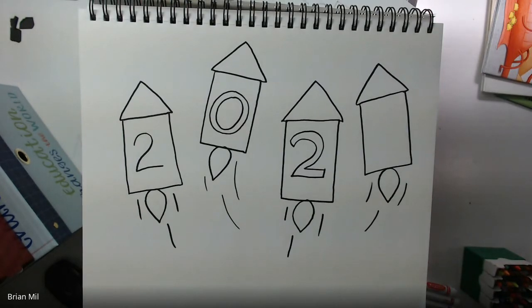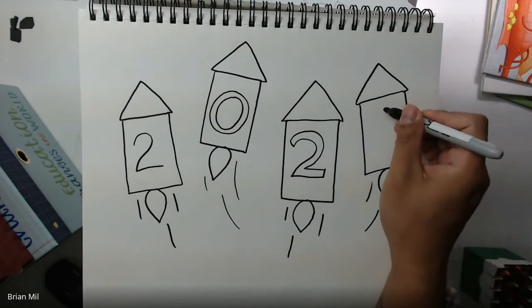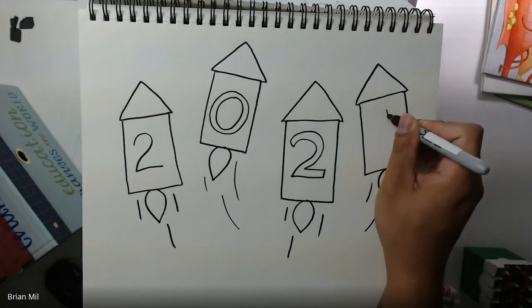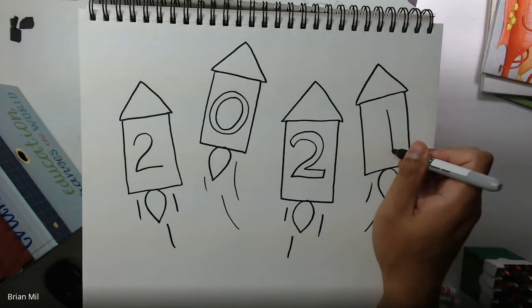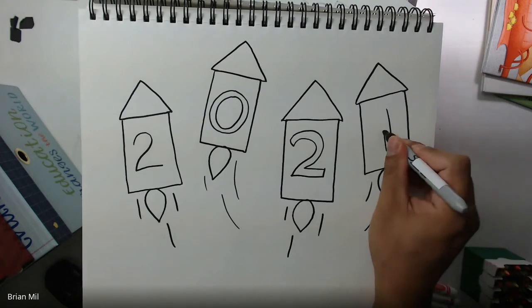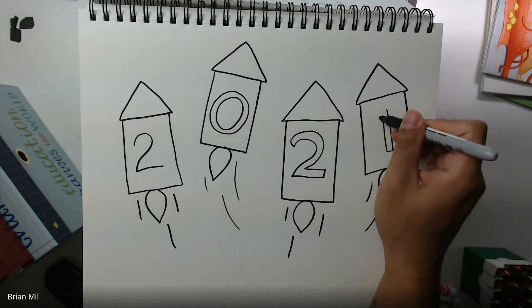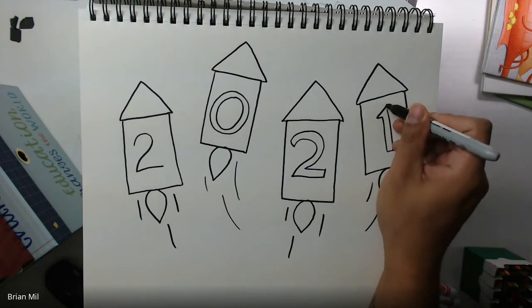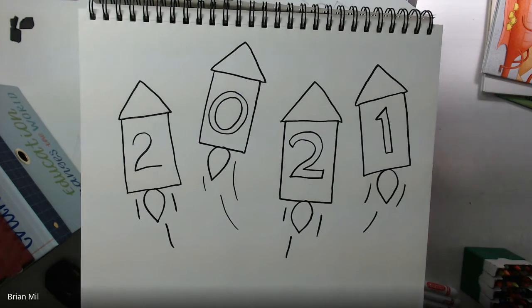And since it is a new year there is a date change and it's right over here. So this last rocket is going to change into a number one. So you can do a regular number one like that or if you want to make a blocky, let's go from the bottom, go over and go up a little bit. And then I like to add a little bit of point to the top. There you go. Alright, good job.